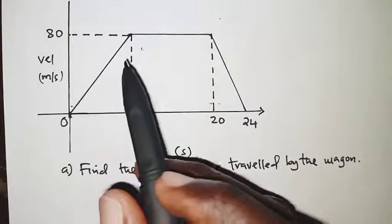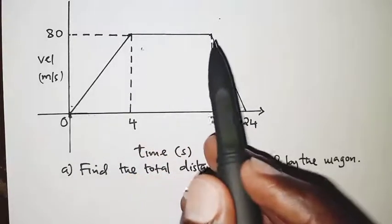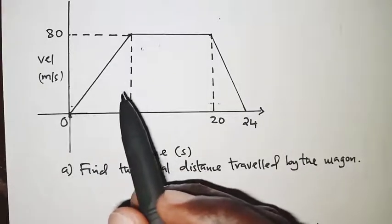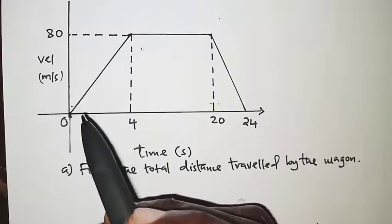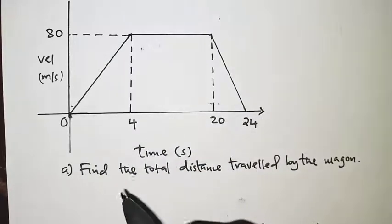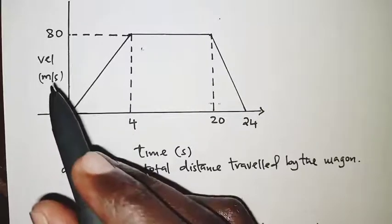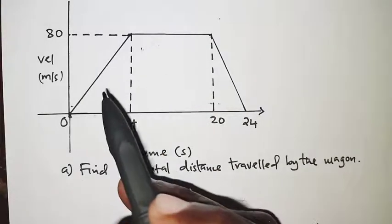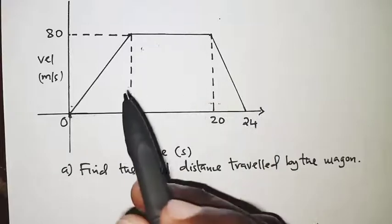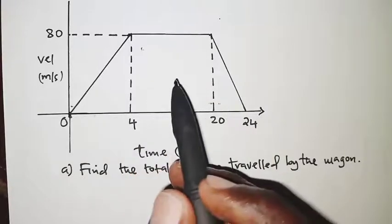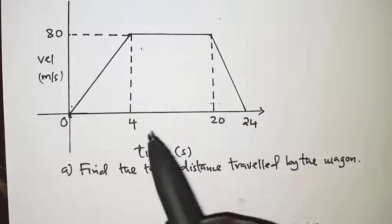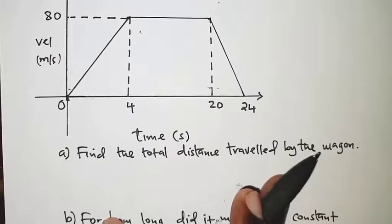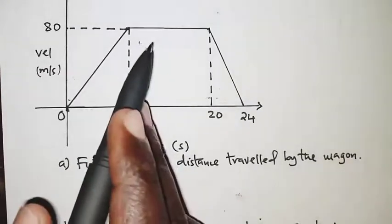As you can see from the graph, the figure below the graph is a trapezium, so we are going to get the area of the trapezium and that will be the distance, of course in meters. Apart from that, you can also subdivide it into different parts so that you have a triangle, a rectangle, and another triangle. Get their areas and add up, whichever one you find easiest. For this particular case, I'll go by area of the trapezium.